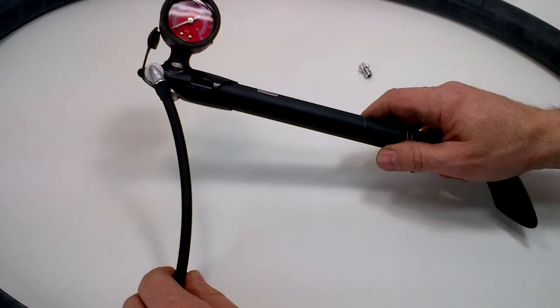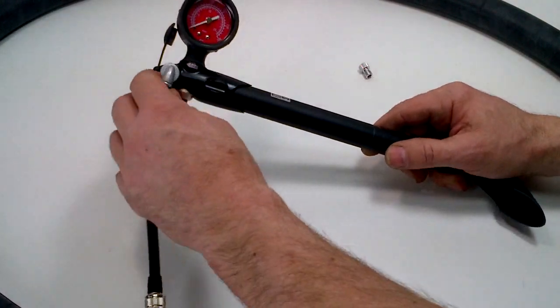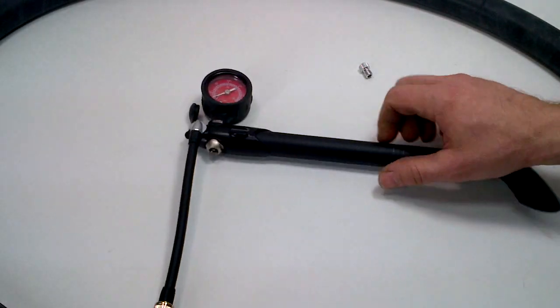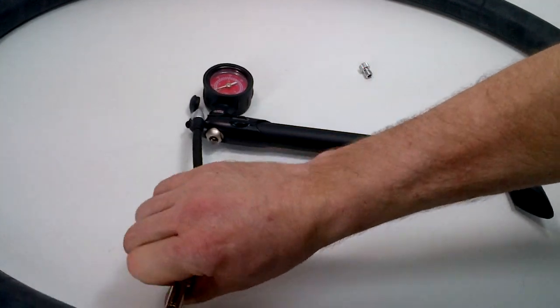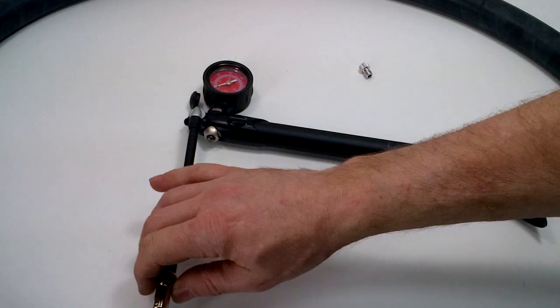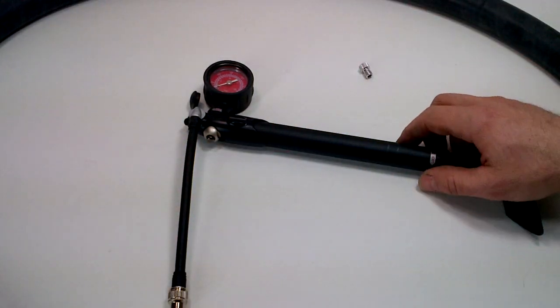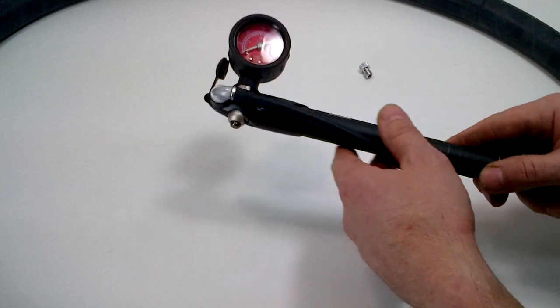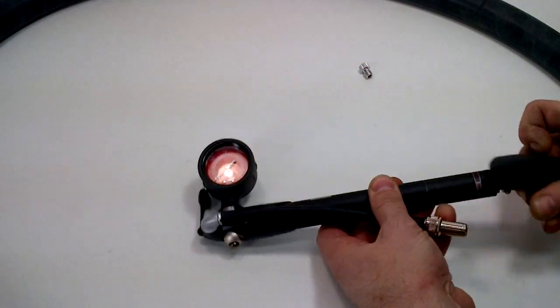This one, no pressure loss at all from the hose, from the seals. The Schrader valve works really well. Doesn't release hardly any air at all when you take it off. Just a real tiny bit, maybe a PSI or two in volume. Not very much at all.